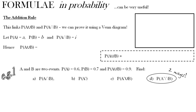Hello again and welcome to lesson two on probability. This one is focusing on formulae, and there are two key ones that we need to know for S1: the addition rule, which we'll do first, and the multiplication rule, which applies to conditional probability.